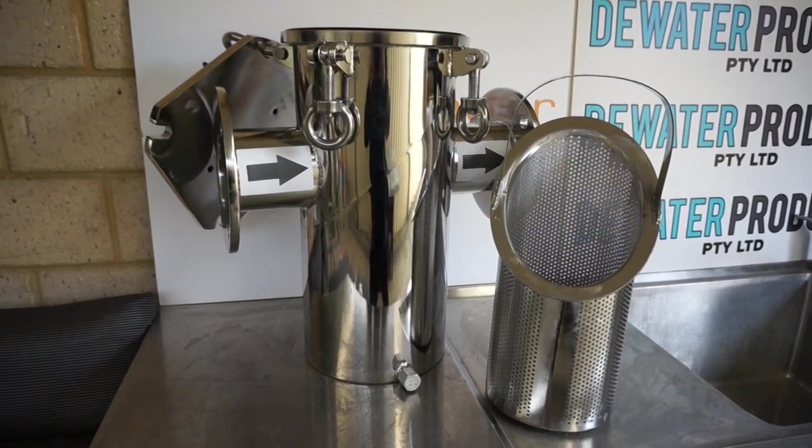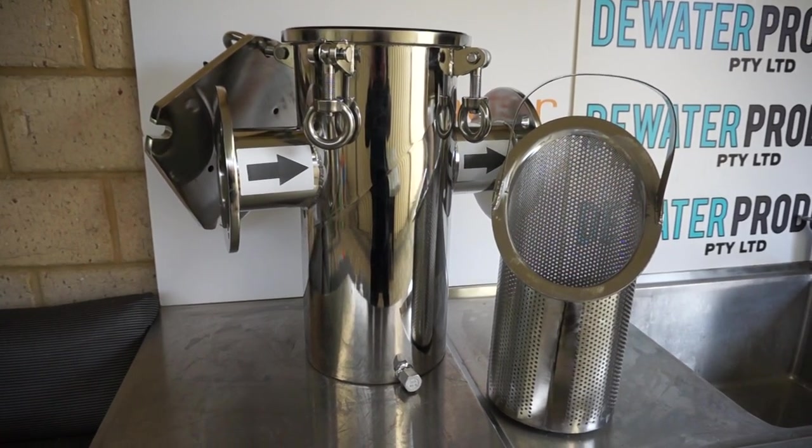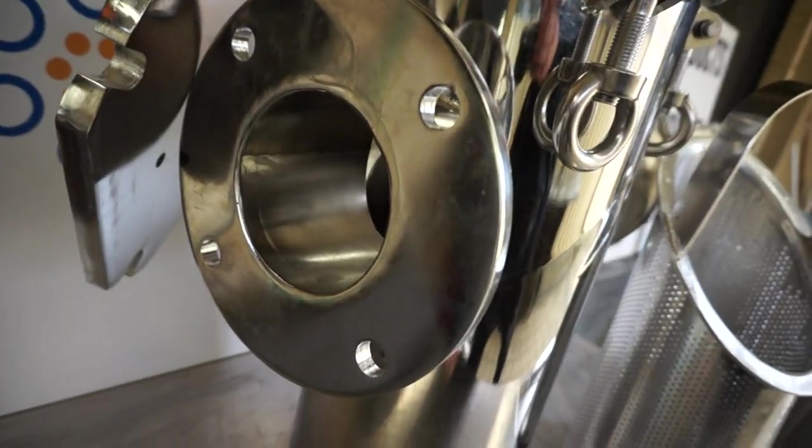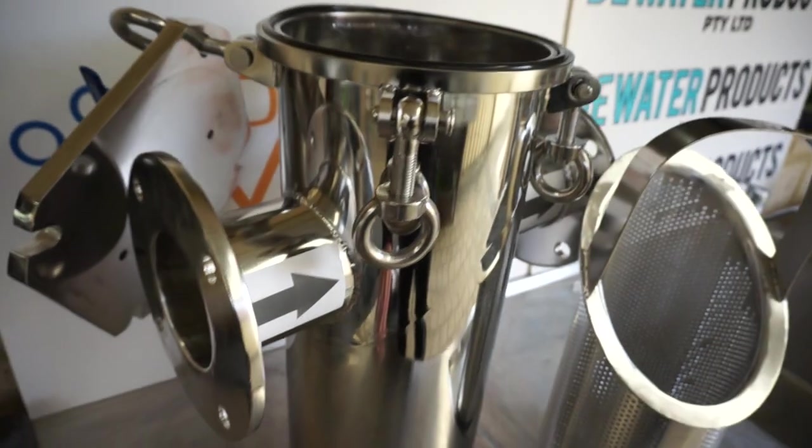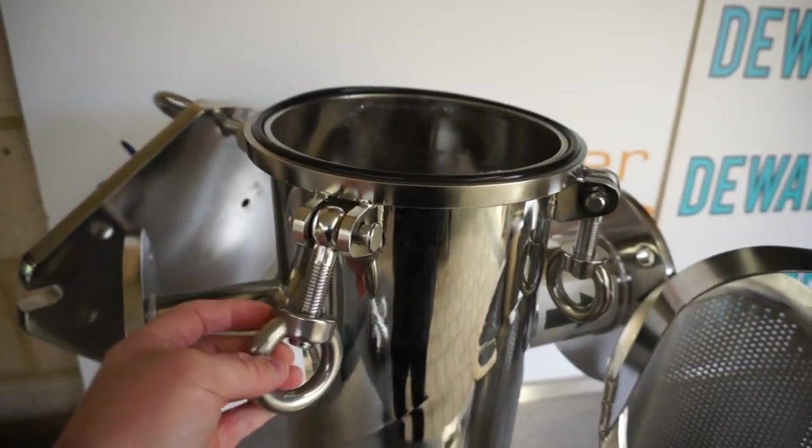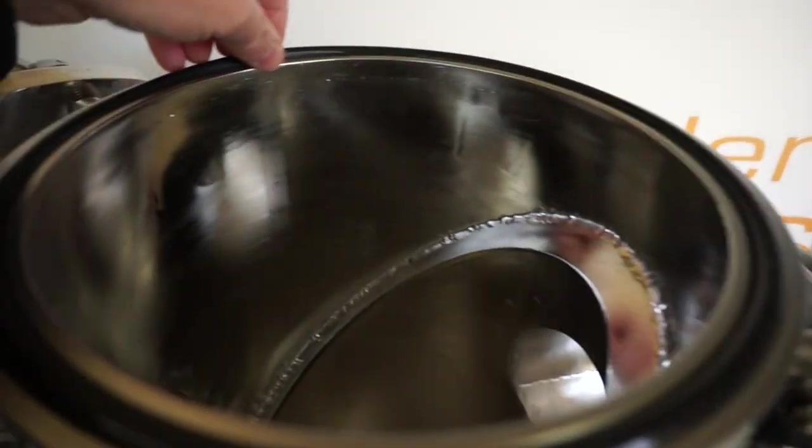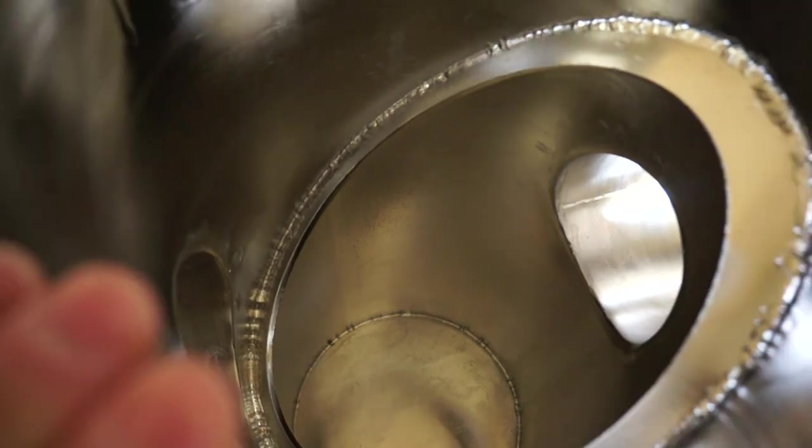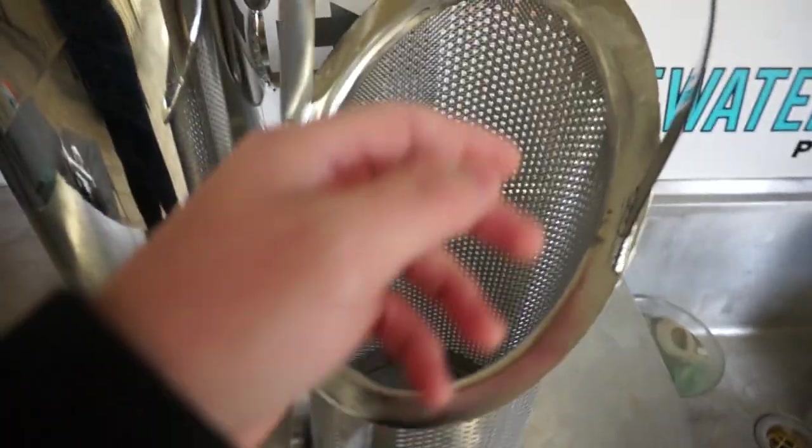Table D flanges, quick release T bolts on the top lid, good thick o-ring, very well made drain plug. Here's the internal basket.